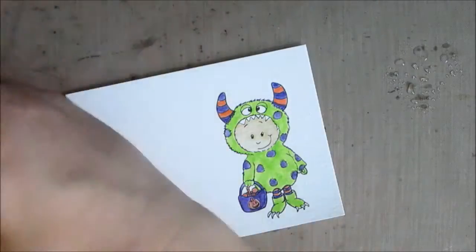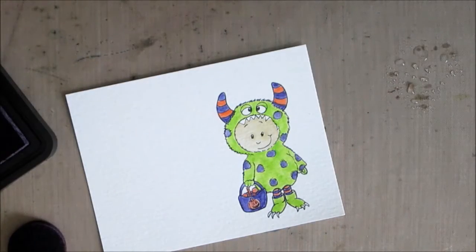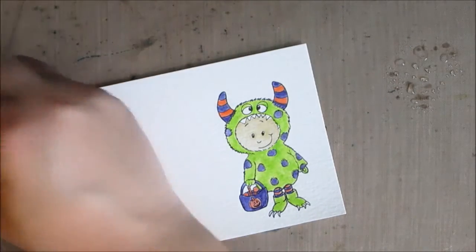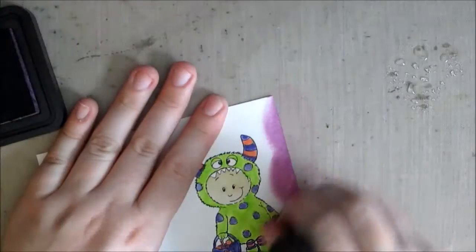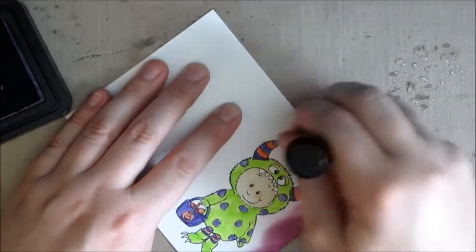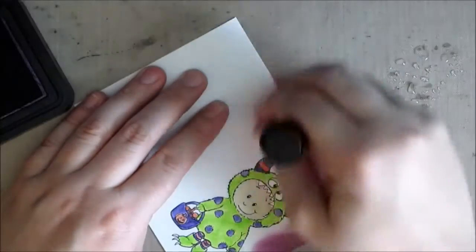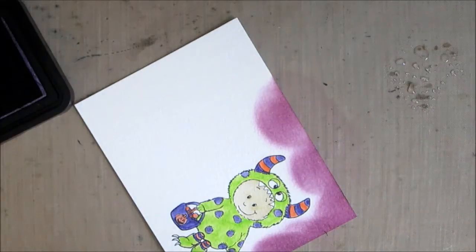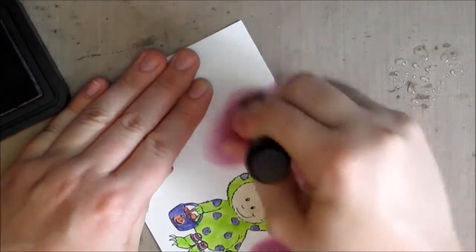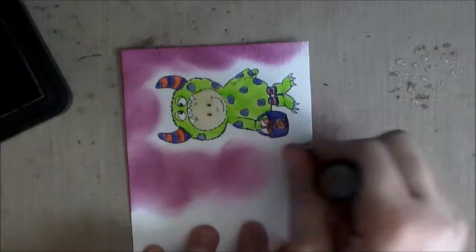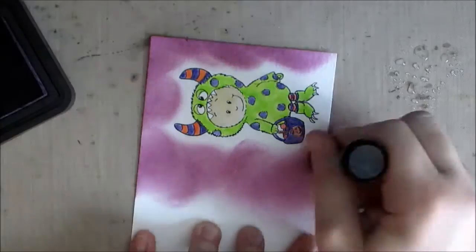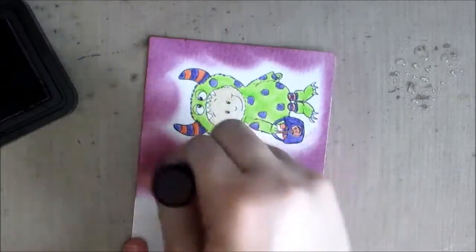So now I want to start adding the night sky. I'm using distress ink for the night sky. I'm starting with seedless preserves but I'll also be using dusty concord and black soot. I had tried to do this in the past by painting everything on, so first I would tap it onto my craft sheet and then try to paint all the color on. But that took a really long time and so I thought what if I just add the distress ink right to the watercolor paper.